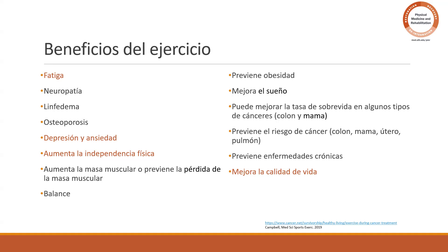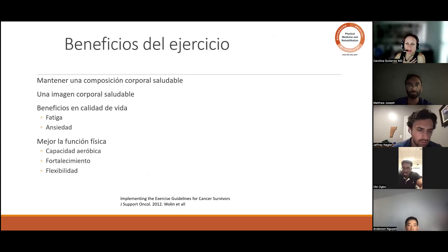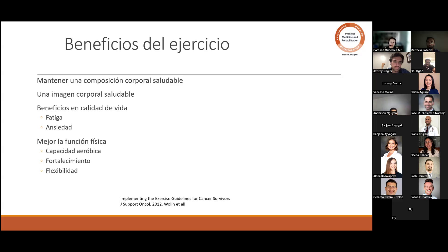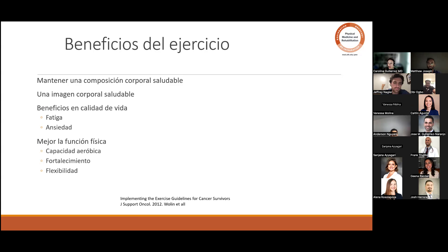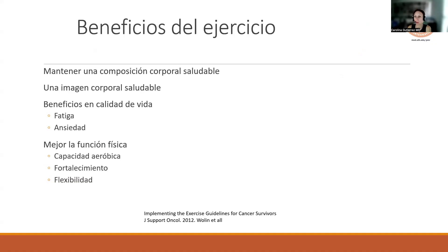Para fatiga es level one evidence — es la primera cosa que se recomienda para fatiga: physical activity and exercise. Medicamentos, por ejemplo, no tienen casi evidencia. Los beneficios como habíamos mencionado: mantener una composición corporal saludable. Muchas veces me fijo más en composición corporal versus BMI o peso, porque es mejor que tengan más músculo. Queremos también mirar la composición muscular. Los pacientes que hicieron ejercicio se describían que se sentían mejor y se veían mejor — mejor imagen corporal. Tiene muchos beneficios con la calidad de vida como disminuir la fatiga y la ansiedad, y mejora la función física, la capacidad aeróbica, fortalecimiento y flexibilidad.